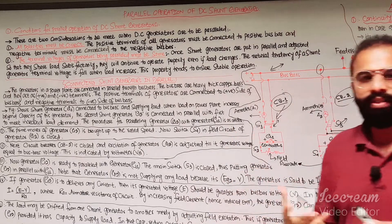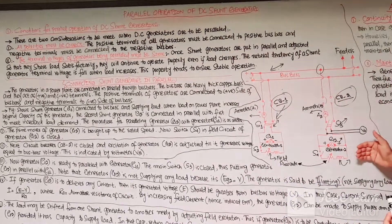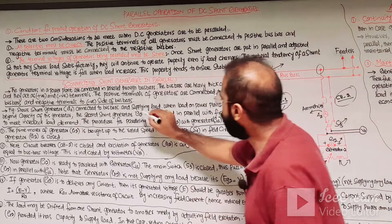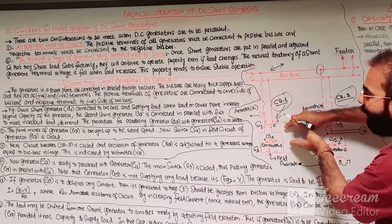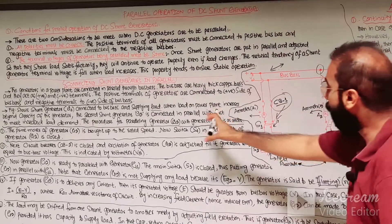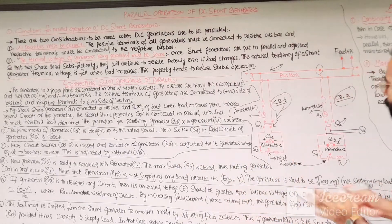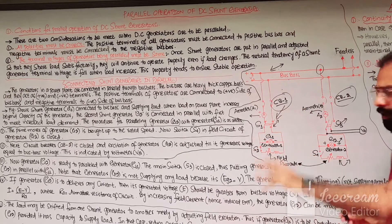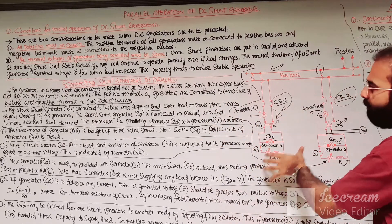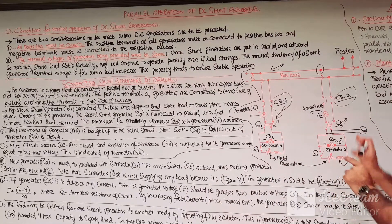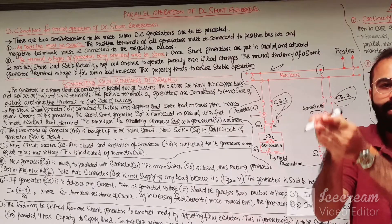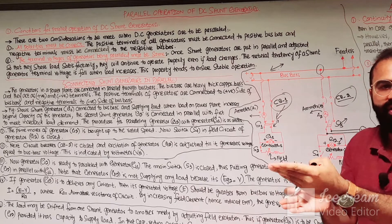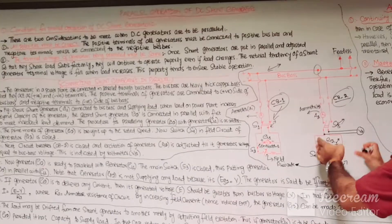Let us discuss the procedure for connecting the G2 generator in parallel with the G1 generator. G1 generator is currently connected to the bus bars and supplying the load. When the load on the power plant increases beyond the capacity of G1, or if G1 is overloaded, the second generator G2 should be connected in parallel with G1 to meet the increase in load demand. This is the essential requirement when connecting generators in parallel.